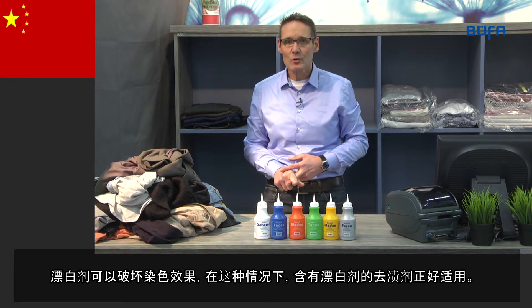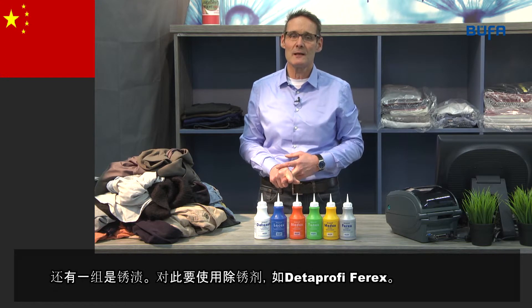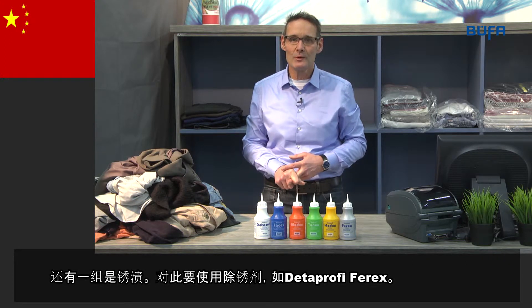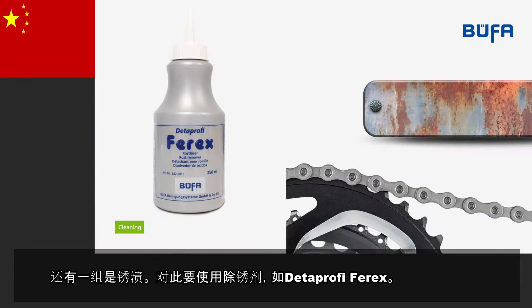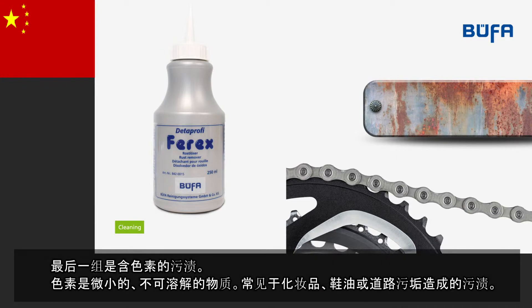In the next group, we have rust stains, caused by oxidized iron coming into contact with fabrics. These can be removed with a rust remover, our Ferrex.